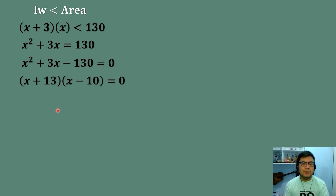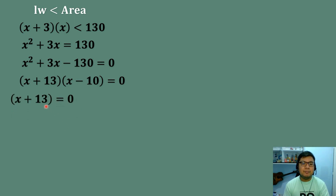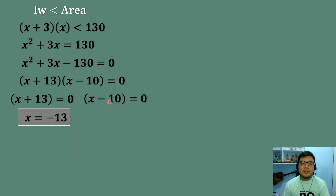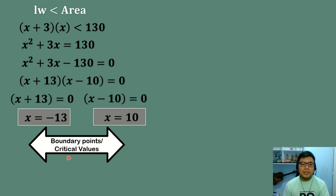Using the factoring method: the factors of x squared plus 3x minus 130 are found by finding two numbers that multiply to negative 130 and add to positive 3. Those numbers are 13 and negative 10, since 13 times negative 10 equals negative 130 and 13 plus negative 10 equals 3. So the factors are (x plus 13)(x minus 10). Applying the zero product property: x plus 13 equals zero gives x equals negative 13, and x minus 10 equals zero gives x equals positive 10. These are the critical values.